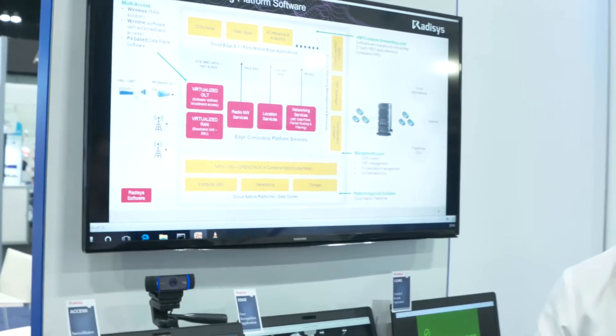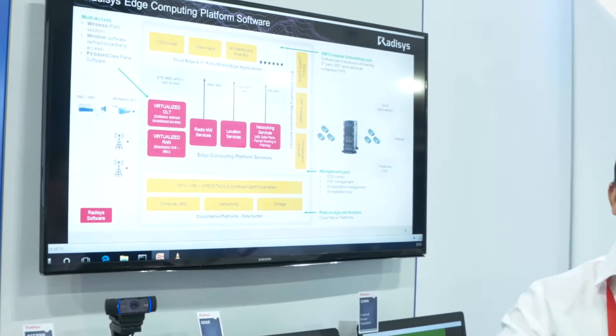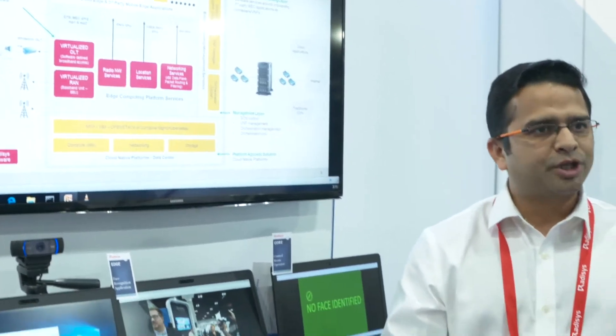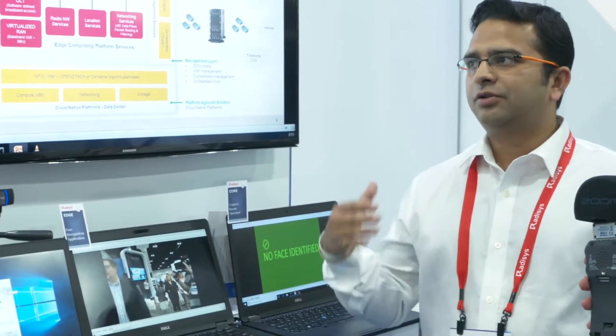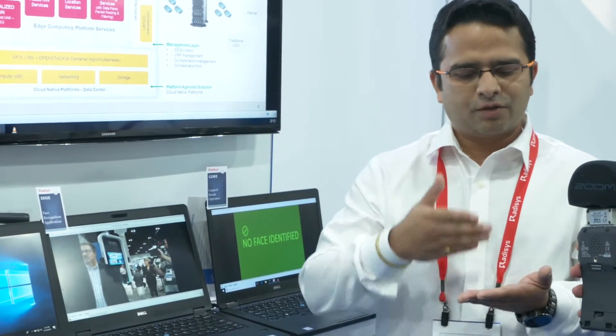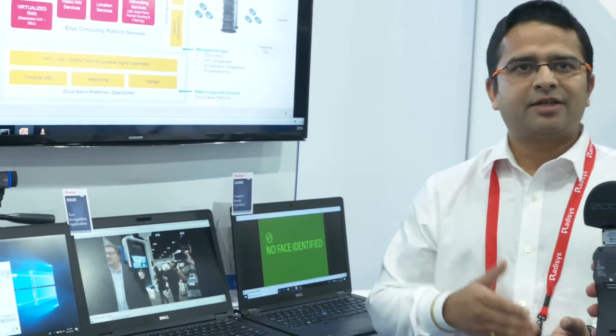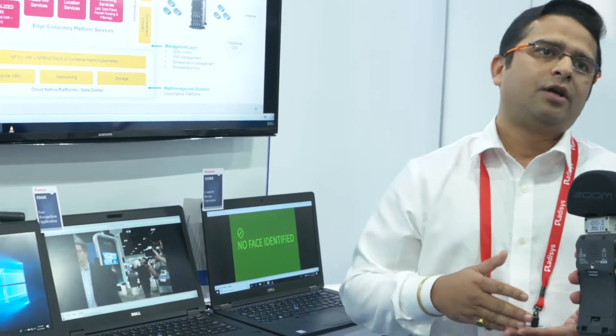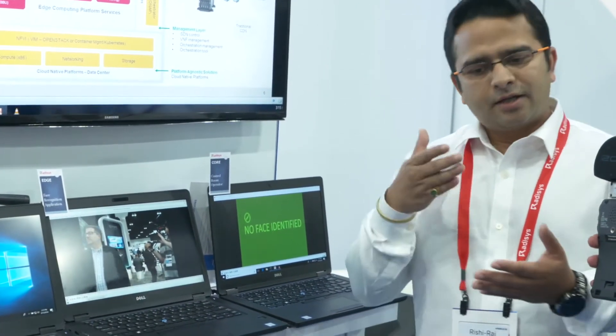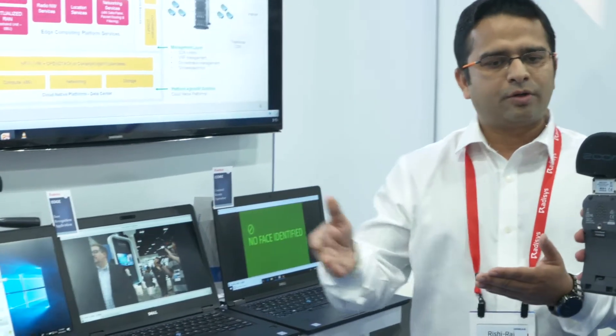Use cases are pretty imperative with respect to edge computing, and everybody has a very different understanding. We don't act on the use case space essentially, but to stitch the story completely for the platform services we have, we need to pick a couple. We have categorized them into two broad categories: the first is a data analytics use case, and the second is a traffic steering use case. What we'll show today is a traffic steering use case, where we provide lower latencies by steering the traffic — not going all the way to the core, but breaking it out locally at the edge so that you can save the backhaul costs.